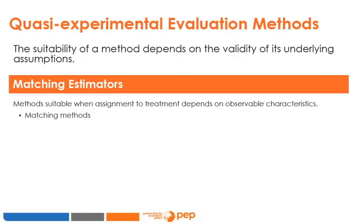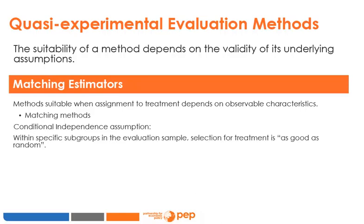In the next two modules, we will discuss estimators based on matching. The main underlying assumption of matching estimators is selection for treatment according to observable characteristics. In the literature, this is called the conditional independence assumption. This refers to the independence of potential outcomes and assignment to treatment T after having controlled for the observable variables that determine this assignment. Within specific subgroups in the evaluation sample, selection for treatment is as good as random.